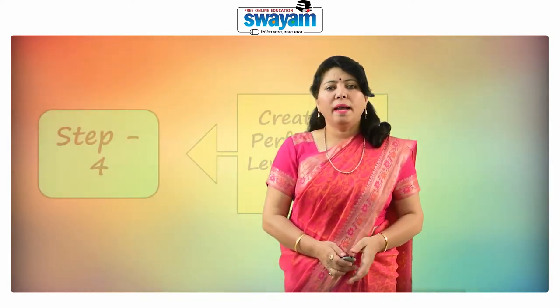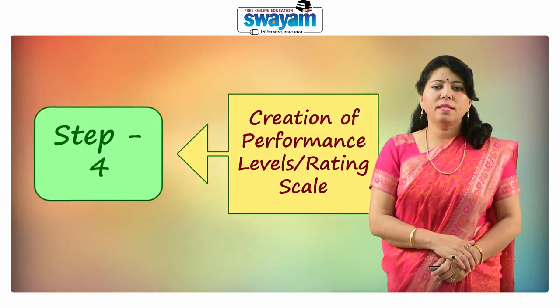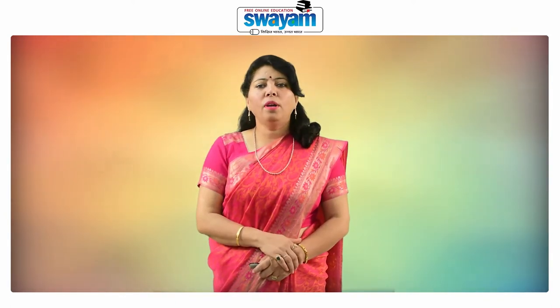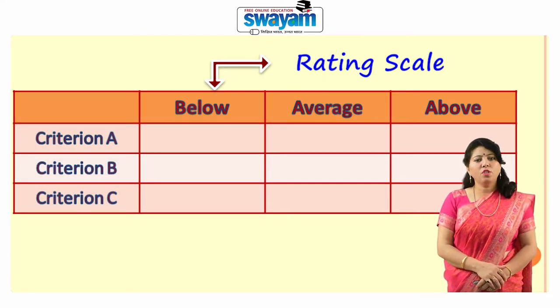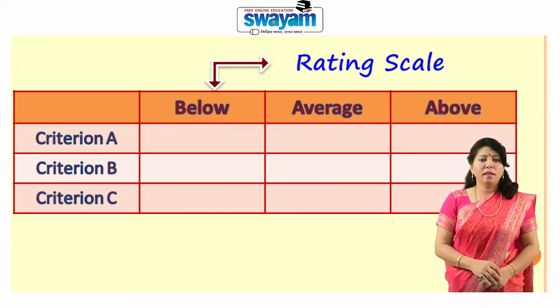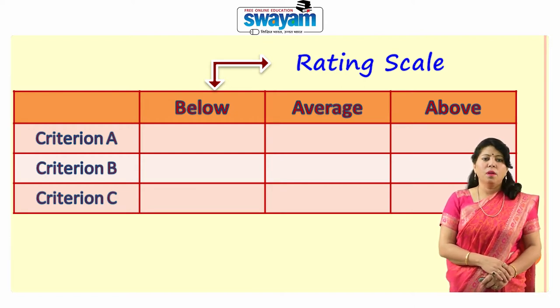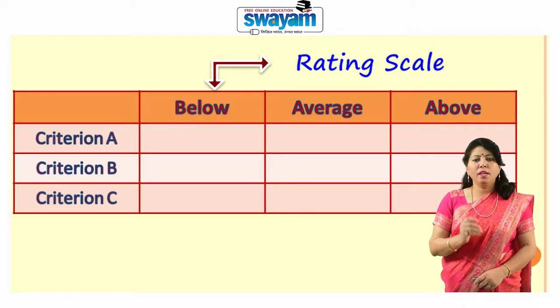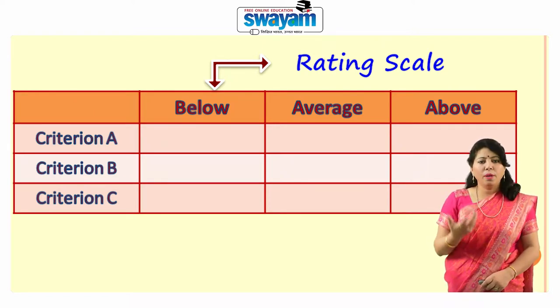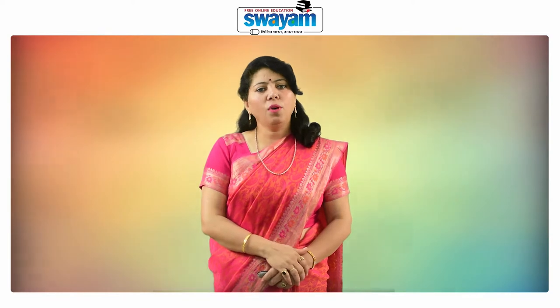Step four is about the creation of performance levels or rating scales. In this step, designing the rating scale and deciding the number of rating scale points has to be determined based on the purpose of the rubric and assignment. After determining the broad level, it is needed to figure out what type of scores will be assigned for each task. Most rating scales include between three to five levels, and some teachers use a combination of numbers and descriptive levels, arranged from highest to lowest or lowest to highest.